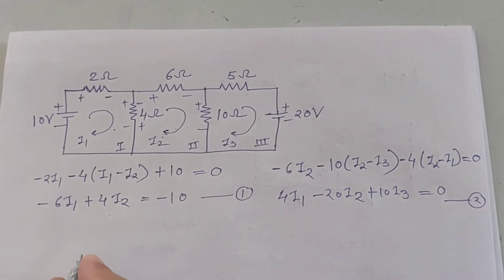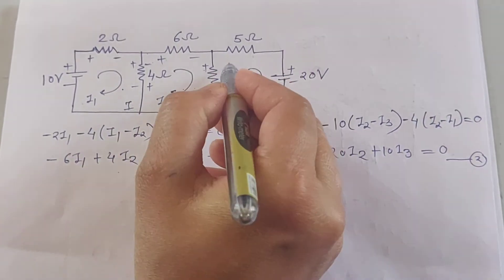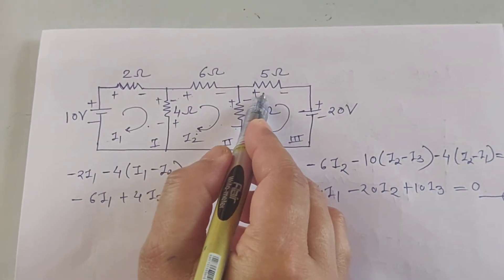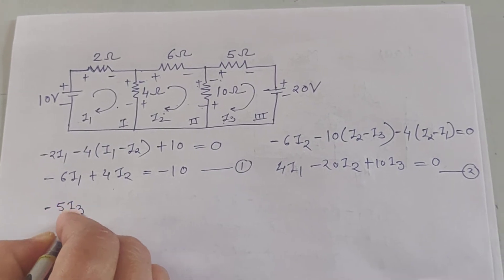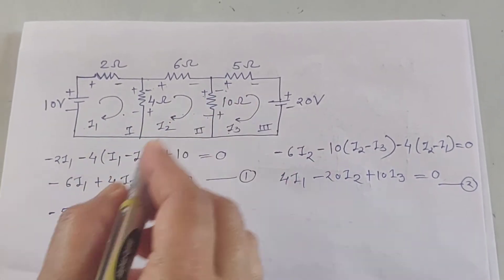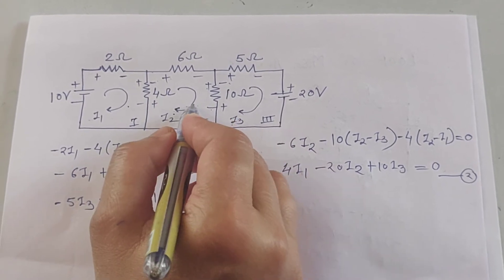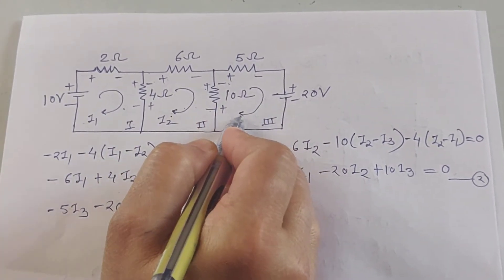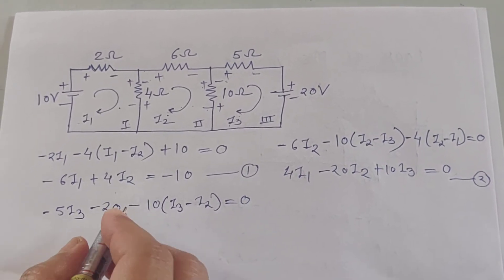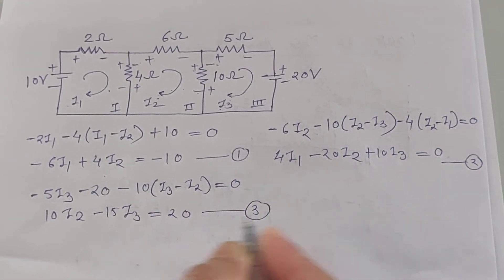Now apply KVL for the third loop. Mark the polarity plus/minus. Starting with current I3: it is minus 5·I3, then the battery source is minus 20, then this 10-ohm resistor is common for second and third loop but we are writing the equation for the third loop, so it is minus 10·(I3 minus I2), equals zero. Solving gives: 10·I2 minus 15·I3 equals 20. That is your third equation.